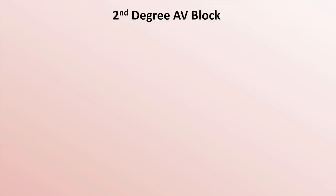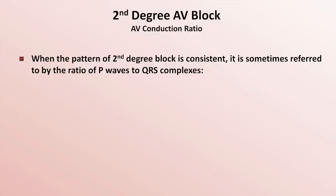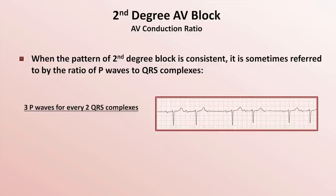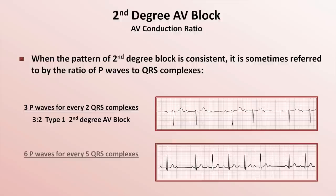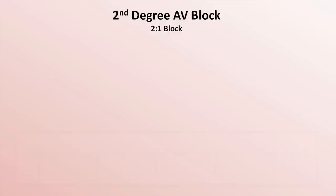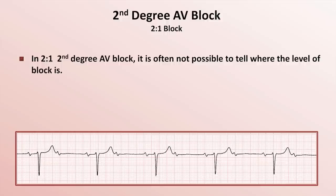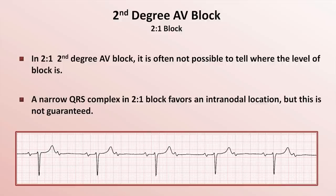Before talking about the last type of second degree block, I want to briefly mention the concept of AV conduction ratio. When the pattern of second degree block is consistent, it is sometimes referred to by the ratio of P waves to QRS complexes. For instance, 3 P waves for every 2 QRS complexes would be called 3-to-2 type 1 second degree AV block, and 6 P waves for every 5 QRS complexes would be 6-to-5 type 1 block. This brings us to 2-to-1 block, in which every other P wave gets blocked. In this form, it is often not possible to tell where the level of block is. A narrow QRS complex in 2-to-1 block favors an intranodal location, but this is not guaranteed; there are rare examples of 2-to-1 block with a narrow QRS occurring within the His bundle.